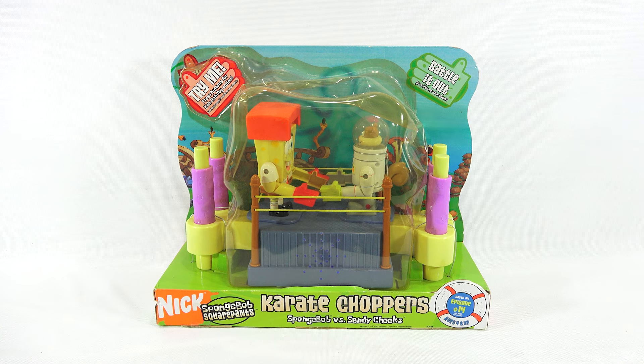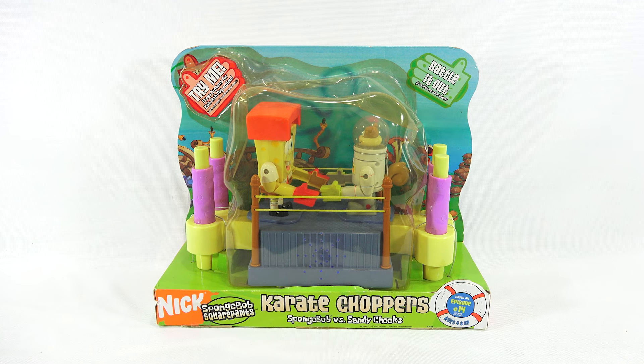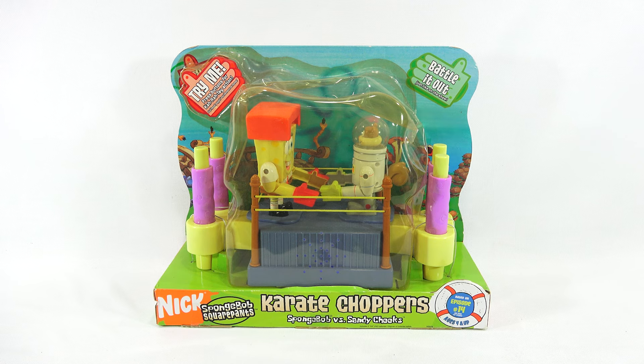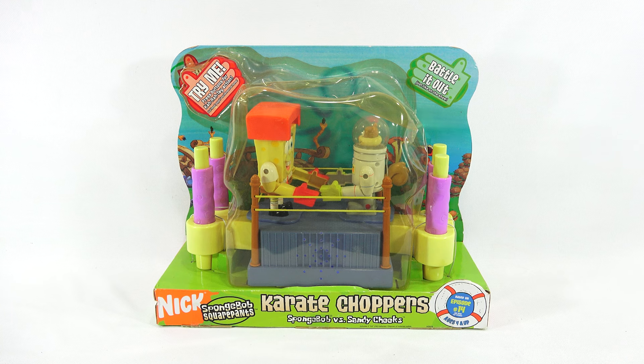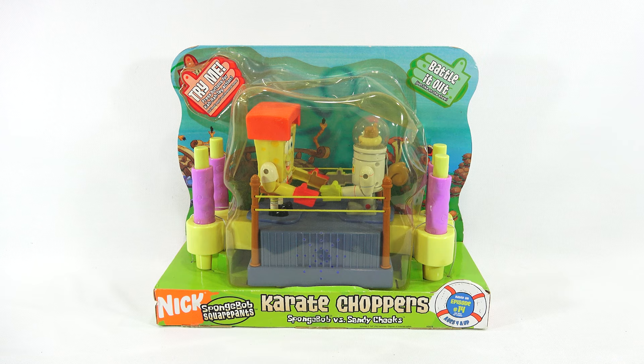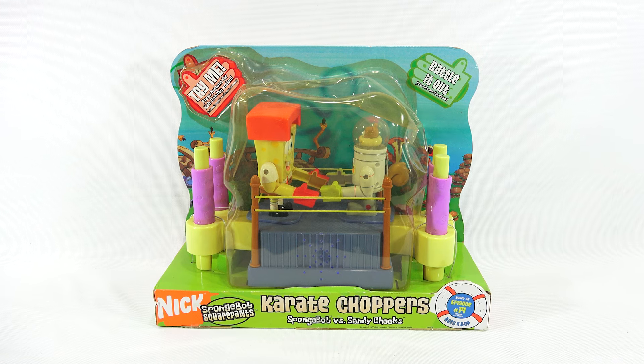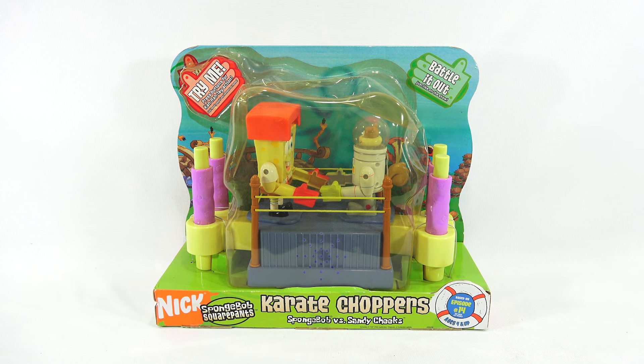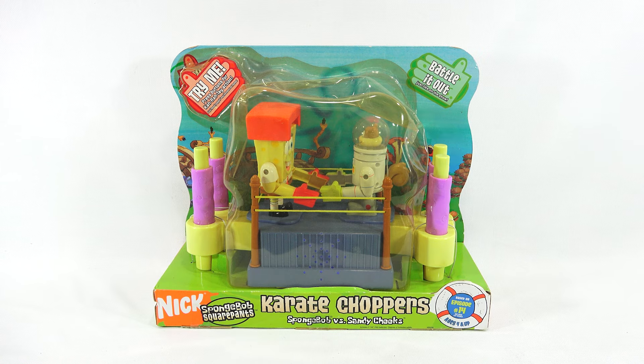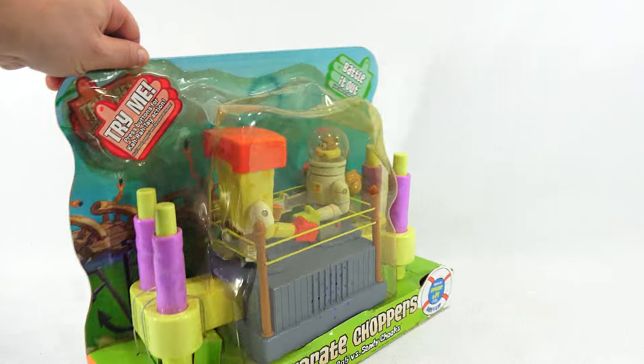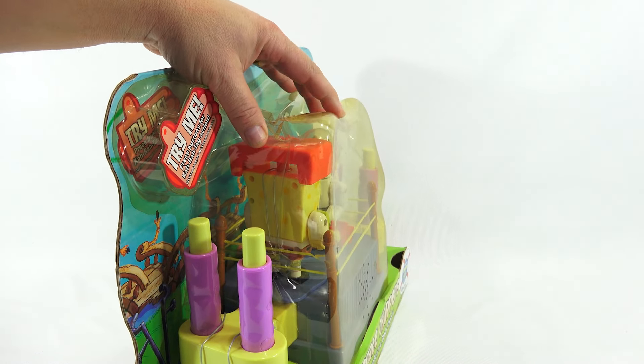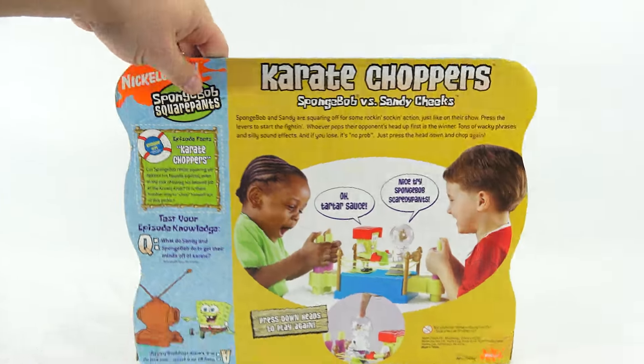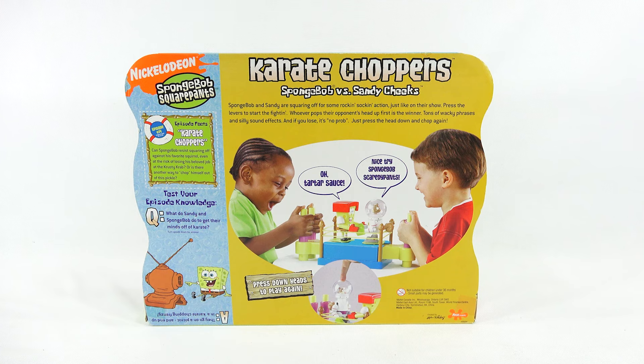Now looking at the packaging now, it says try me in the upper left corner, press buttons for karate action. It does not work because the batteries are so old. And then it says battle it out, just like on the show. So now this is the SpongeBob versus Sandy Cheeks karate choppers, based on episode number 14. And then it says see back for details, ages four and up. Now look at that packaging. It's kind of beat up. It looks like it's seen better days. But it's the first one I've seen in nine years in the package. So I would consider this an extremely rare item.